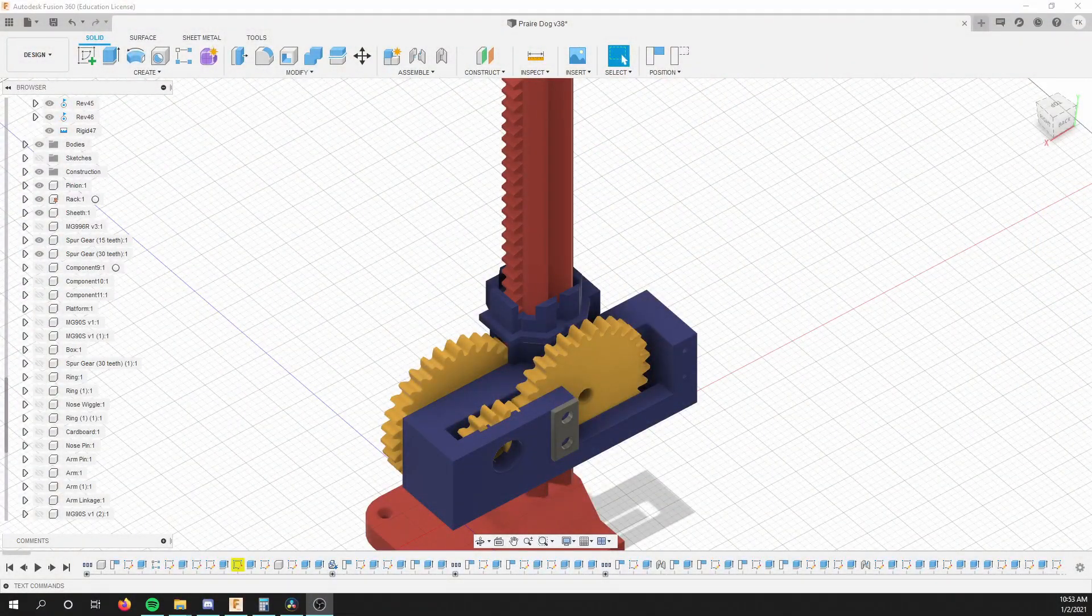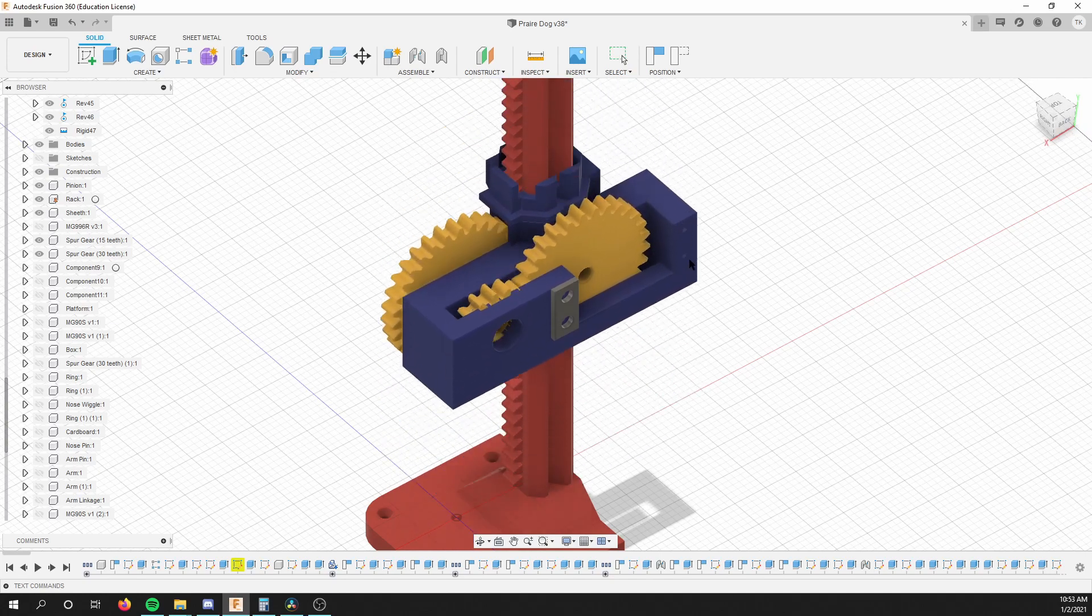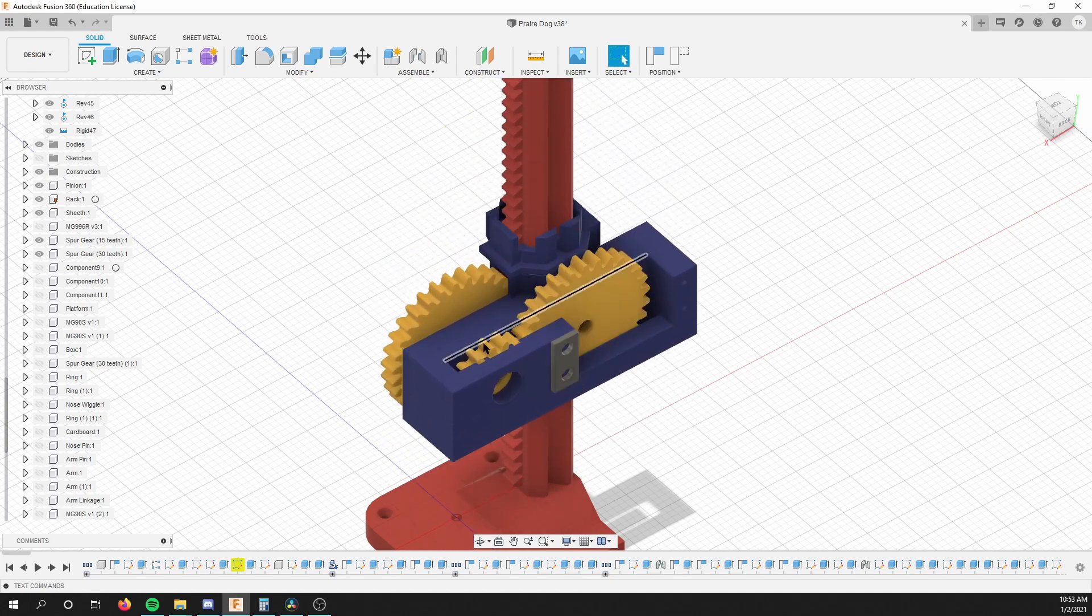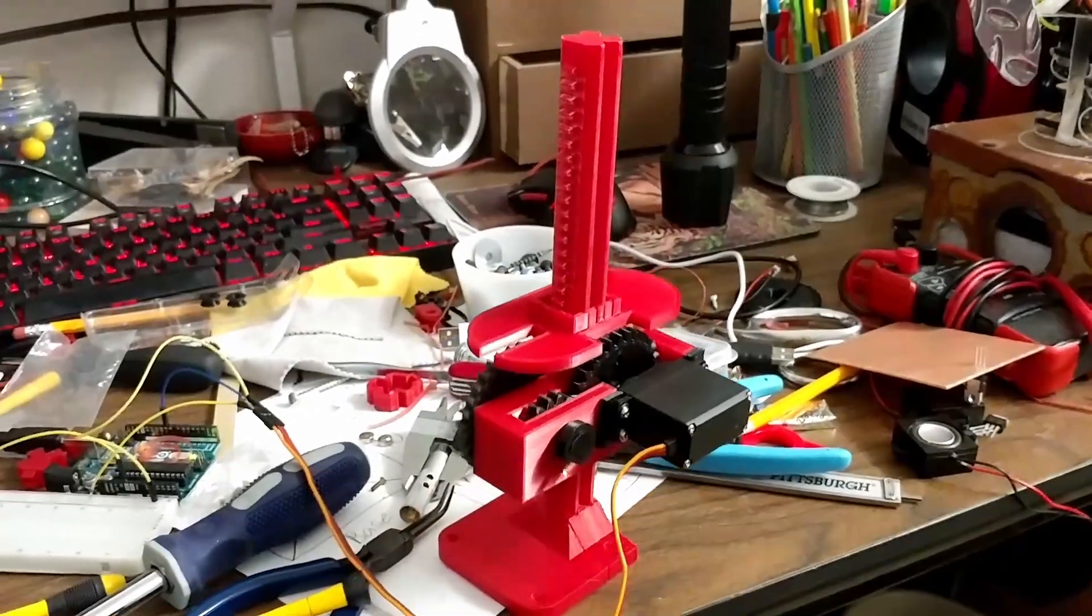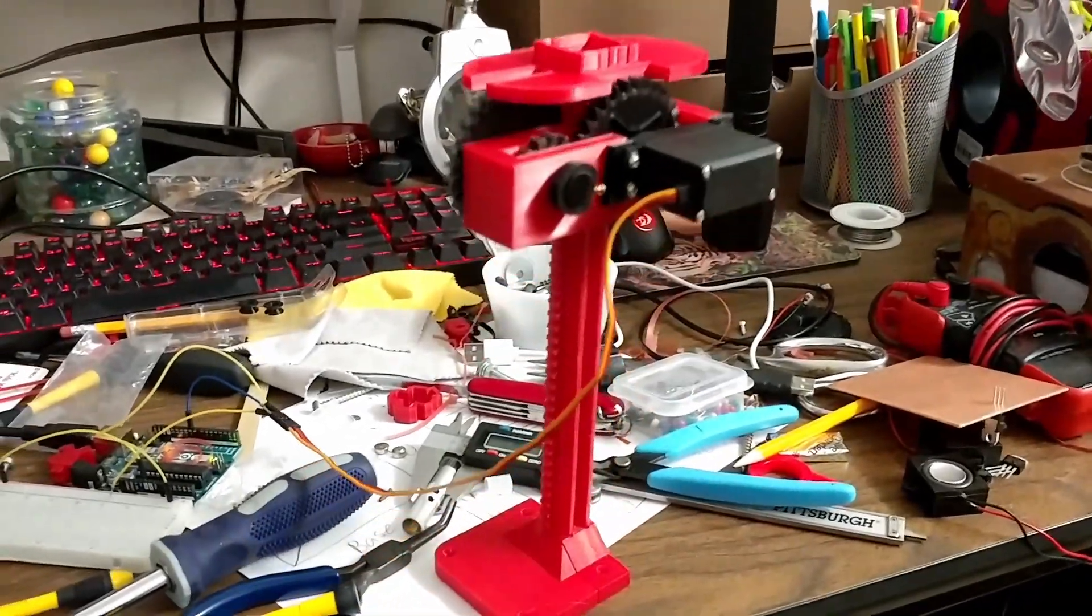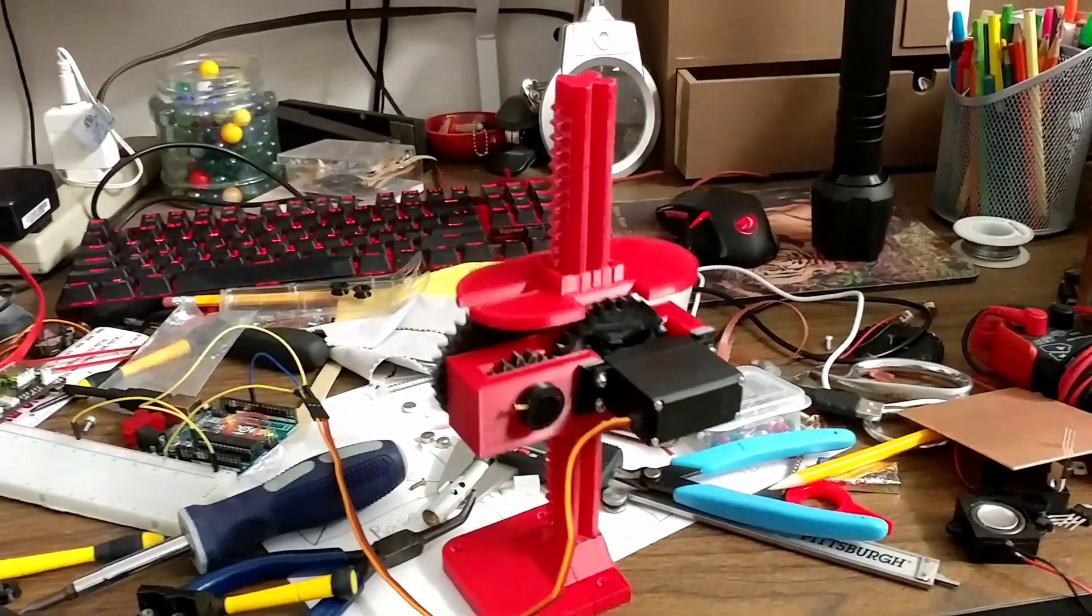Now, I know what you're thinking. That's all fine and good. All that sliding happens. But, what in the world are those two extra gears in the back doing? Those gears are there because it makes the whole mechanism much smaller. So, the mechanism is required to have six inches of movement up and down. That way, the prairie dog can go all the way in its hole, and then all the way out.